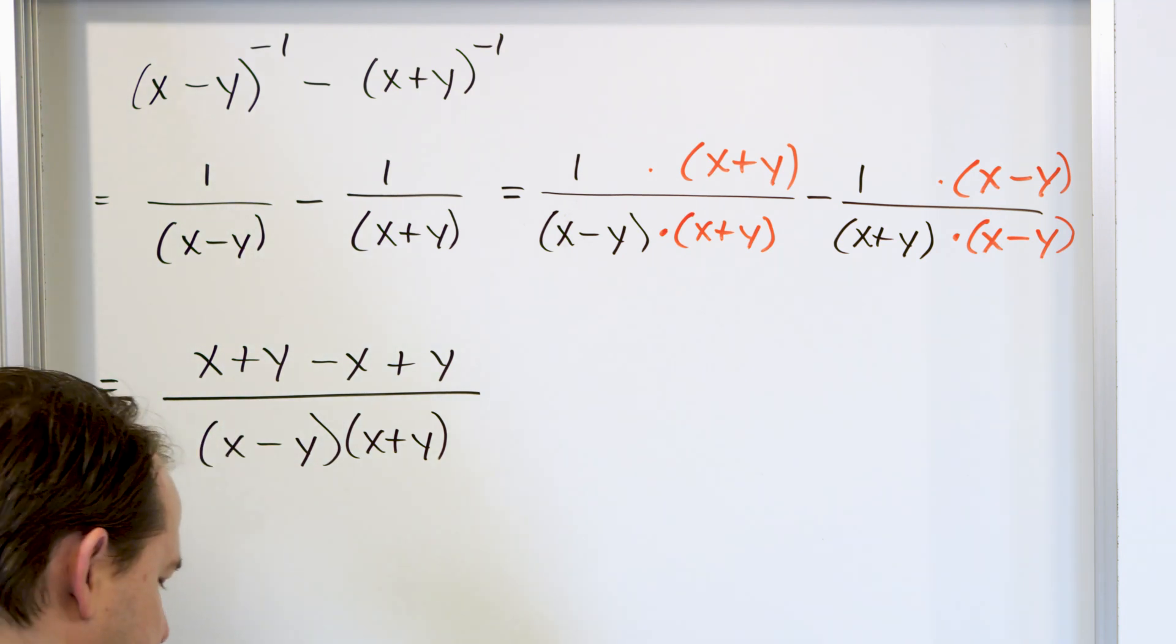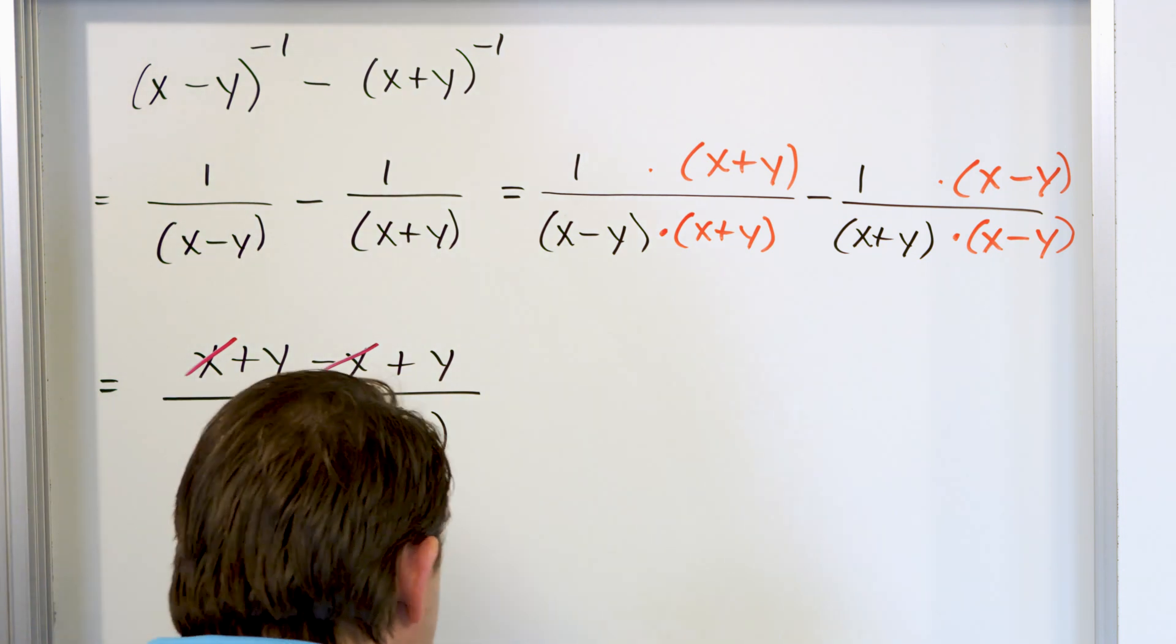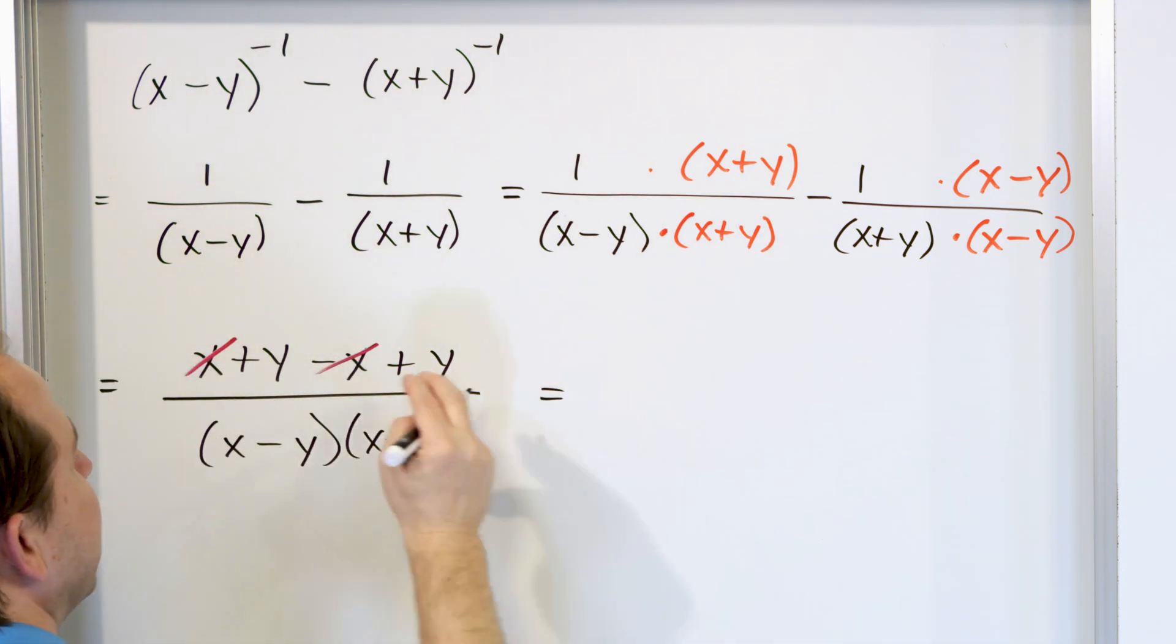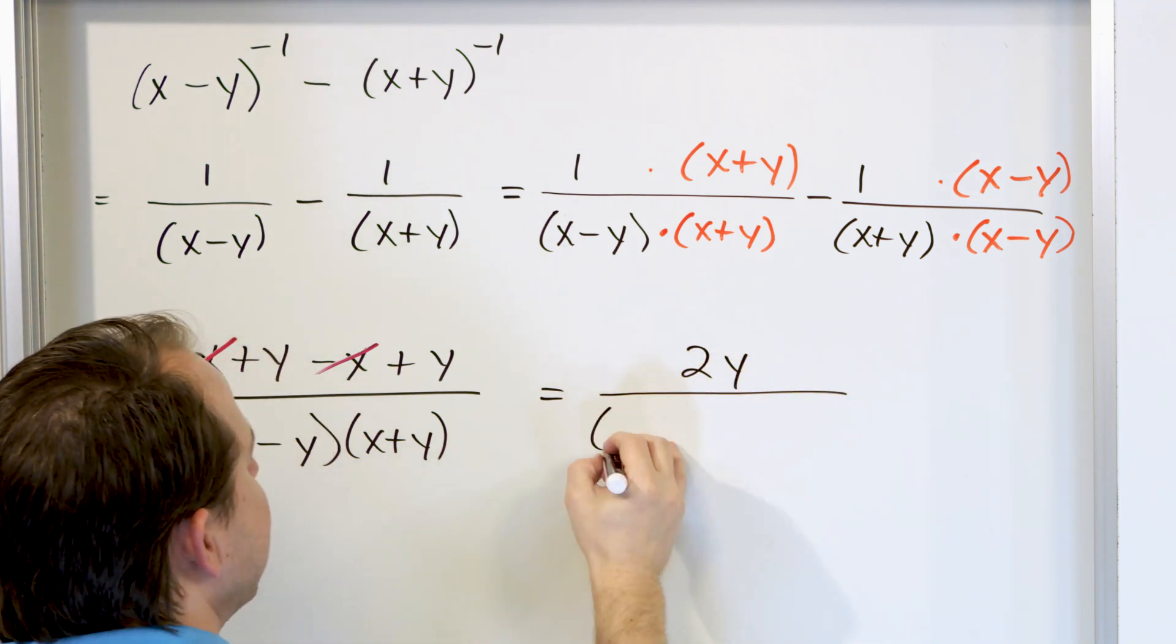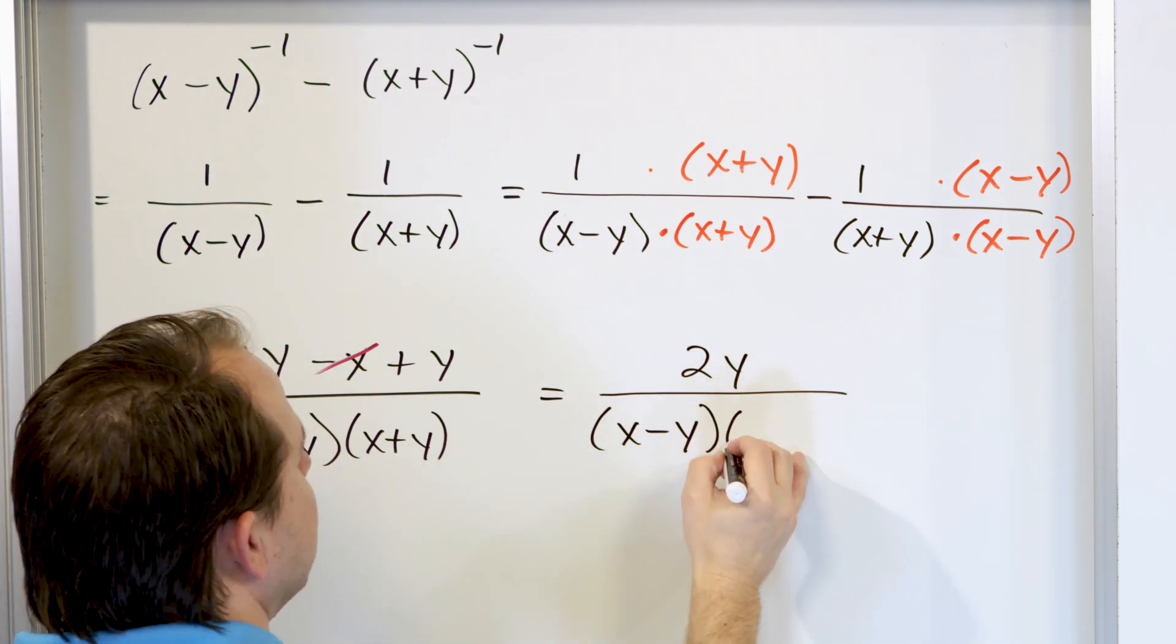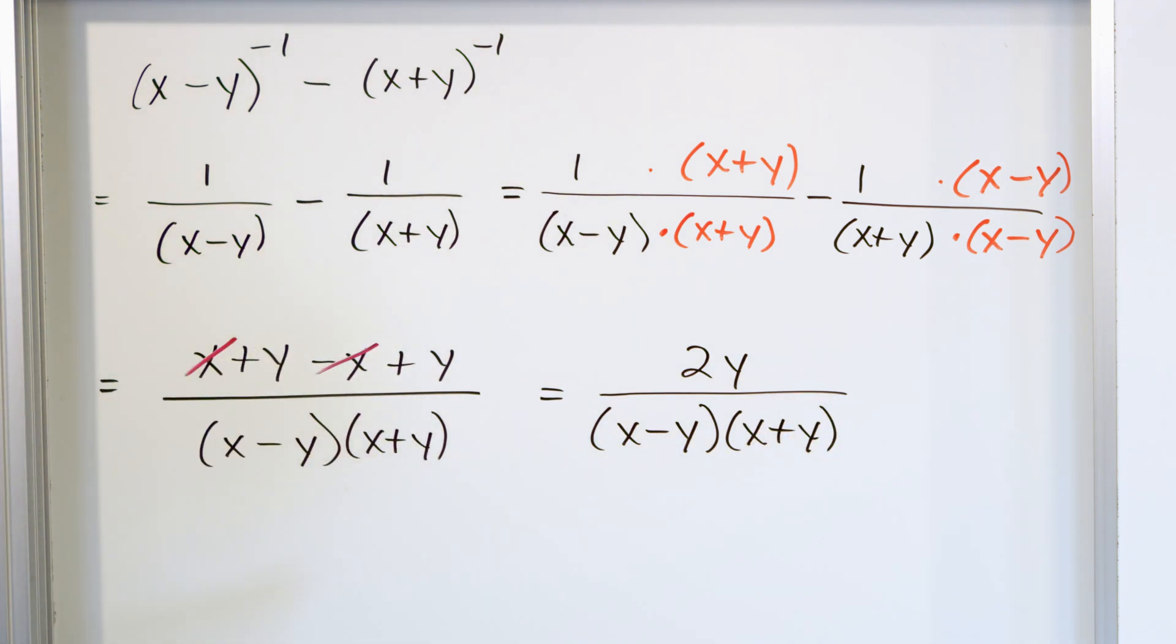Then we have something very close to our final answer. We see though that the x will cancel with the negative x. So the x's go away. So we have at the end of the day is y plus y which is just 2y. And on the bottom we're going to have (x minus y) times (x plus y). 2y over (x minus y)(x plus y).